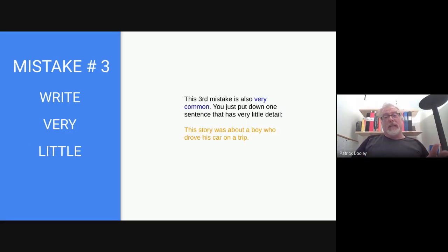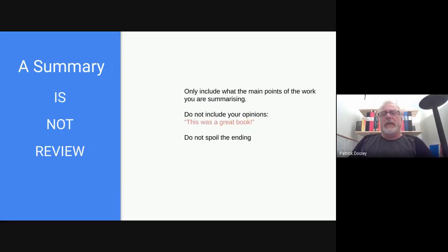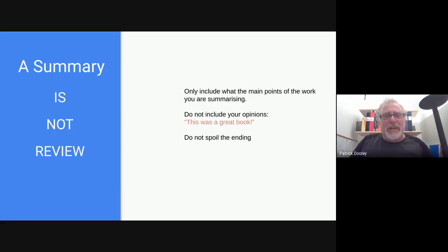The third common mistake is you write just one sentence — something like, 'The story was about a boy who went to a faraway castle.' Yeah, not enough detail. So a summary must include no spoilers if it's a book or film review, but if it's an analysis, then it has to include them. That's all I'm going to cover about summaries for now. To exit out of your presentation, press the Escape button.